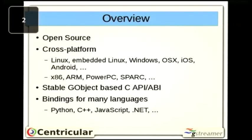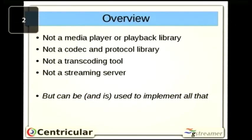GStreamer is completely open source, LGPL, and relies heavily on other libraries for functionality. It's aimed at building on top of things and tying them together into a coherent framework. It's cross-platform, running on pretty much any platform and architecture, with a GObject-based C API that is easily wrappable in other languages — hence many language bindings. GStreamer is not a media player, not a codec, not a protocol library, not a streaming server — but it is used to build all of those things. It is a media engine.